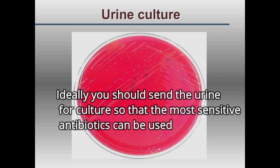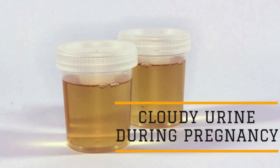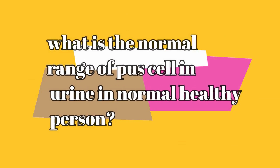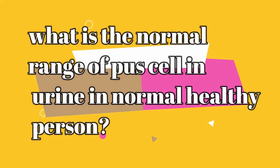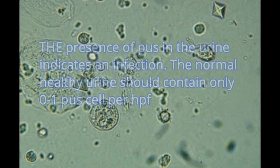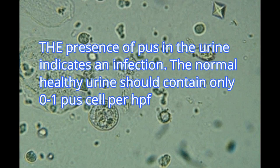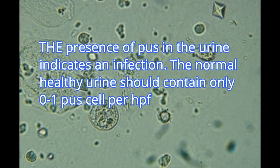Ideally, you should send the urine for culture so that the most sensitive antibiotics can be used. In a normal healthy person, the presence of pus cells in the urine indicates an infection. Normal healthy urine should contain only 0 to 1 pus cells per high power magnification.